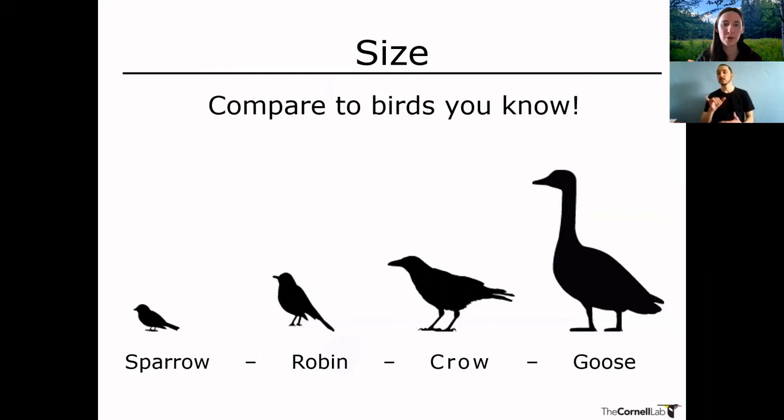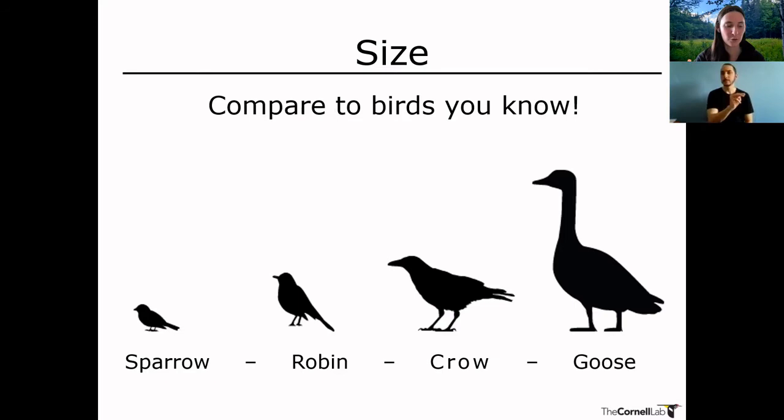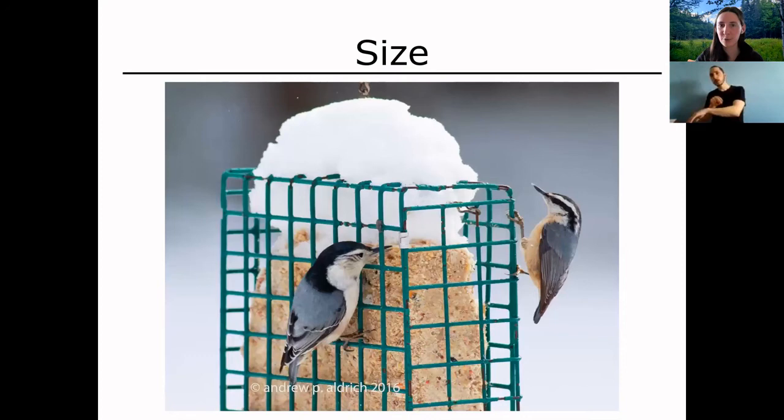You should also compare birds to other birds you're familiar with. You can probably picture in your mind how large a sparrow, robin, crow, or goose is. Rather than saying a bird is 17 centimeters tall, say 'this bird is larger than a crow but smaller than a goose' — that's really helpful. You can also compare birds to objects whose size you know, like a bird feeder in your yard. Size is always used as a rough marker.